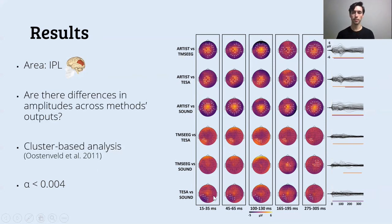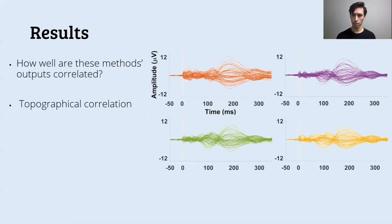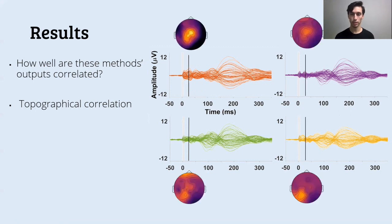So the second thing we wanted to check is how these signals correlated with each other. And the correlation can be seen both in temporal dimension and spatial dimension. So we started with a spatial dimension, and we looked at the topographical correlation. What does it mean? So we had our four signals, and we compared each instant, which is a topography of the signal, and we checked how these topographies correlated with each other. So it's the topographical correlation. And here are the results.